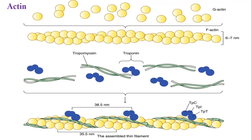The calcium-binding protein TPC has a molecular weight of 18,000 and is highly soluble in water. Each TPC combines with two calcium ions. TPI — the inhibitory subunit — has a binding site for actin but inhibits ATP hydrolysis activity through its binding effect with actin. The tropomyosin-binding subunit TPT binds to tropomyosin and also has the ability to bind with TPC and TPI.